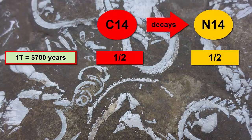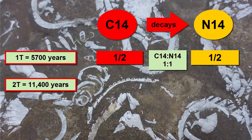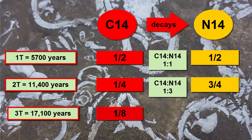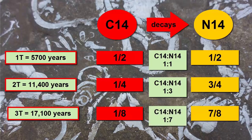After one half-life, assuming there was no nitrogen-14 to begin with in a rock sample, the ratio of the two should be 1 to 1 — equal. After two half-lives, the half that remained of parent after the first half-life is now halved again. Half of a half is a quarter; the remaining three quarters is daughter, and the ratio of parent to daughter is 1 to 3. Another half-life, and we halve the quarter: there's now one-eighth parent and seven-eighths daughter, and the ratio is 1 to 7, and so on.